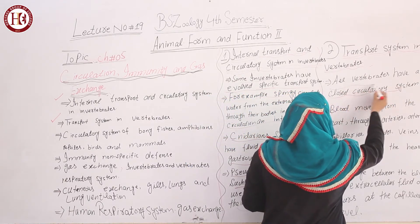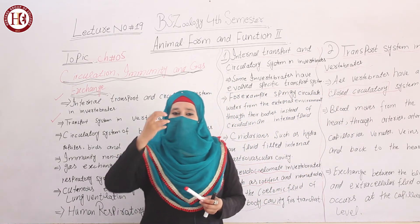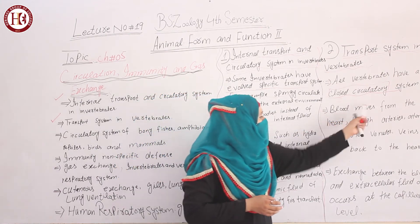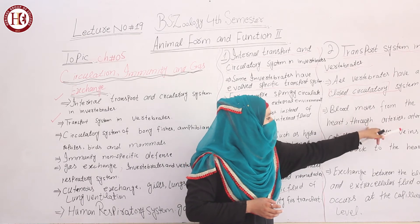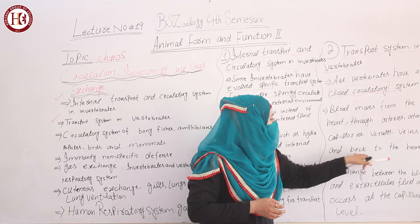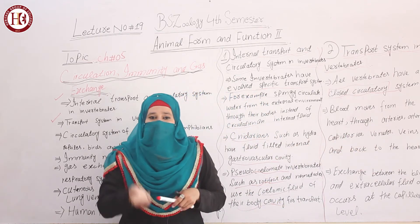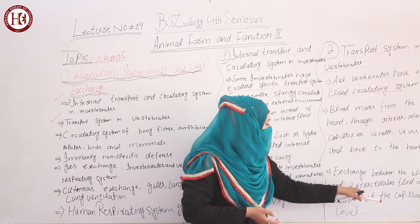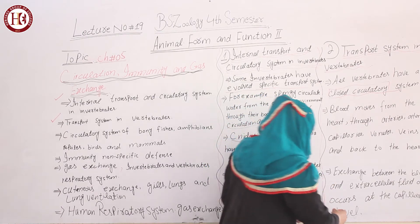All transport of materials and circulation of blood takes place within blood vessels. Blood moves from the heart through arteries, arterioles, capillaries, venules, and veins, and back to the heart. Exchange between the blood and extracellular fluid occurs only at the capillary level.